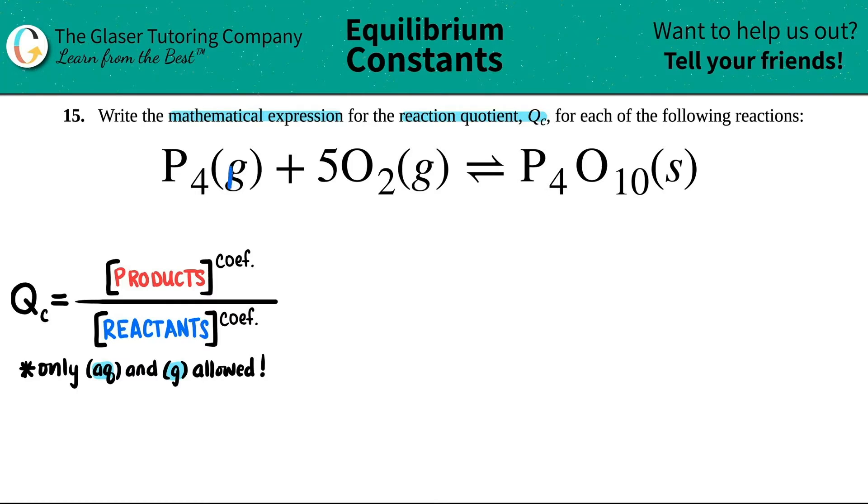I see that I have a gas. I see that I have a gas right here. Another gas and then a solid. Tell me which one of these three are not allowed in the QC formula. Yeah, it's the solid. Solids and liquids are not allowed. So I'm not even going to worry about this guy. If you want to slash through the whole compound, that's fine with me. But I'm not even going to worry about this one. But since these are gases, they go in the QC formula.